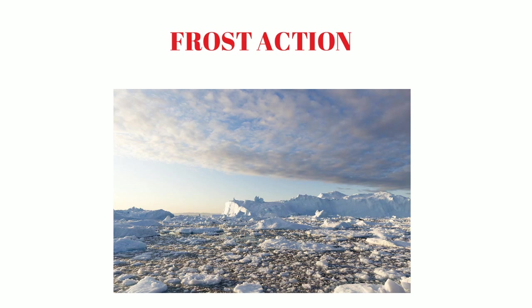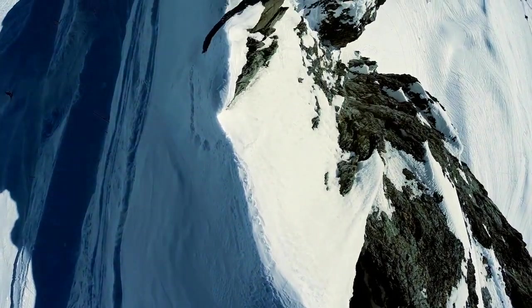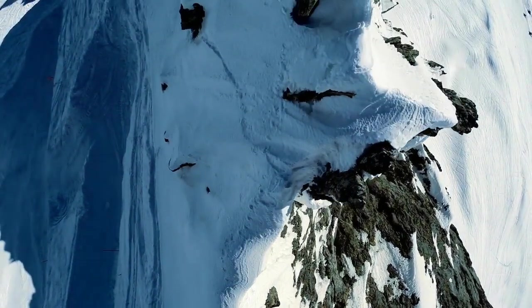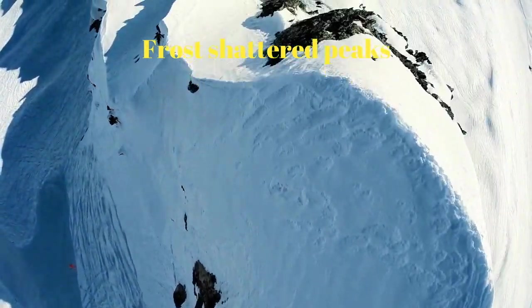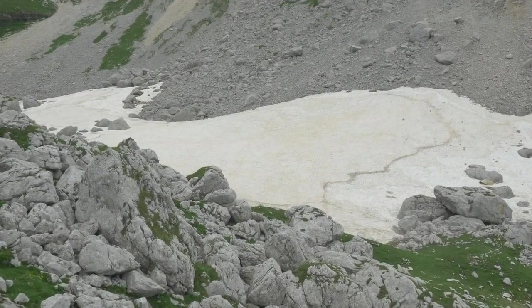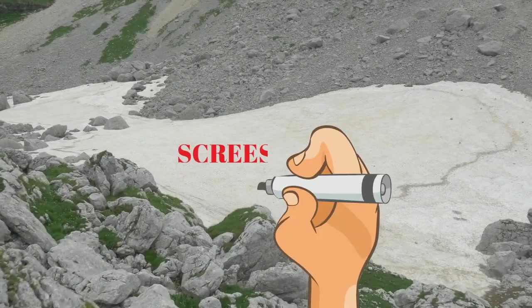Water in rock cracks freezes and becomes ice. This ice expands because when water freezes it expands to one-tenth of its volume, and this puts pressure on the surrounding rock. This creates sharp peaks on mountains called frost-shattered peaks. The rocks that break off slide down the cliff and accumulate at the base, and this accumulation is called scree.